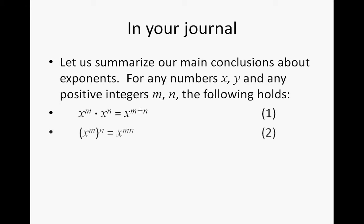The second one is if we have a number raised to a power and then raised to another power, that is the same as multiplying the exponents m times n, and x being raised to that power. And the third one is that if we have two numbers that are being multiplied, and those combined are raised to a power of n, then you can separate that and say it can be x to the nth power times y to the nth power. So those are the three definitions and properties that we have proven in the last two lessons.